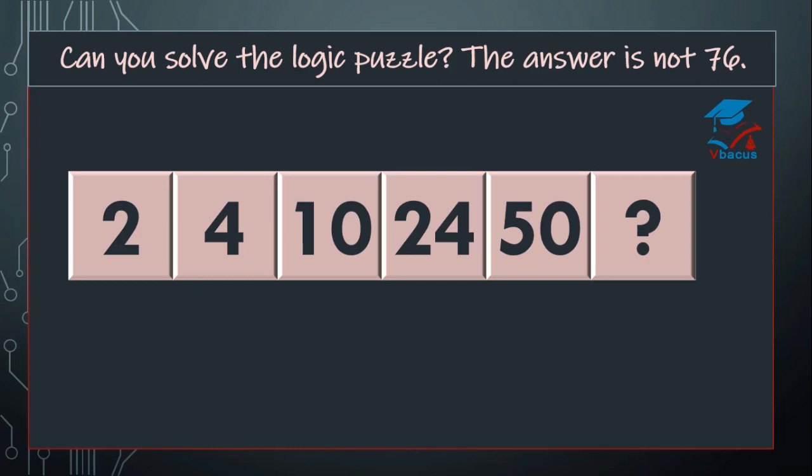In this puzzle, there is a number series and what number is going to be at this place. So, numbers are 2, 4, 10, 24, 50. You have to figure out what number will be there at this place.